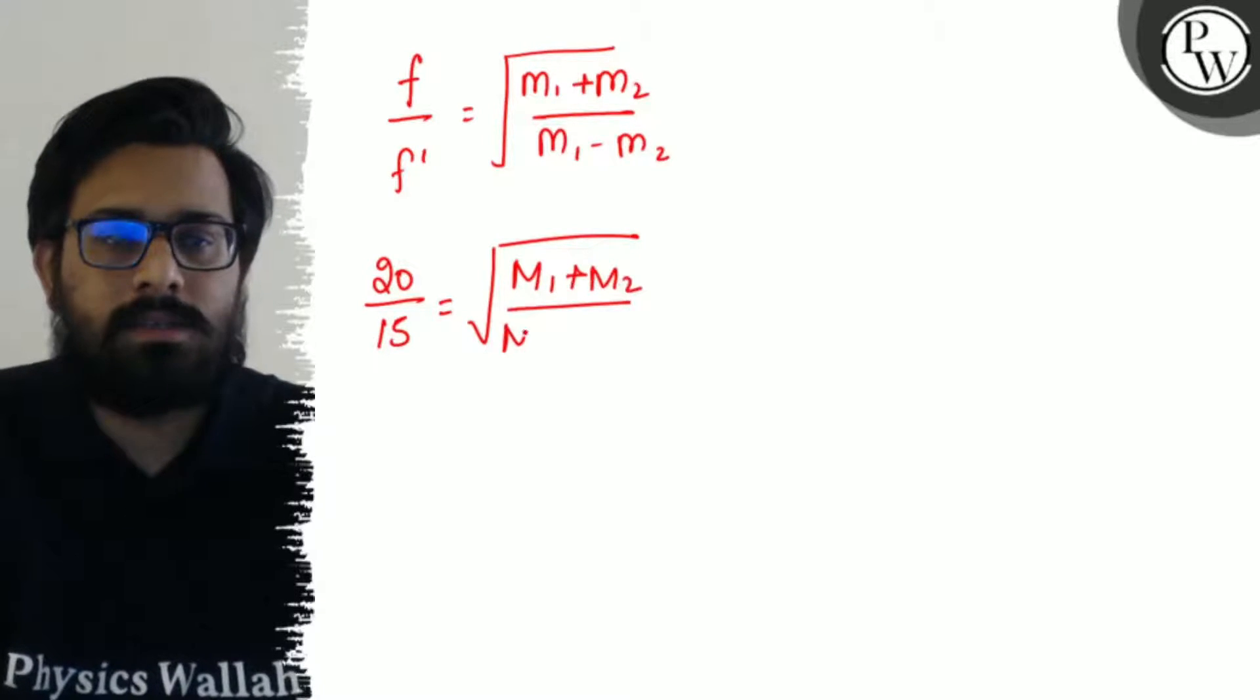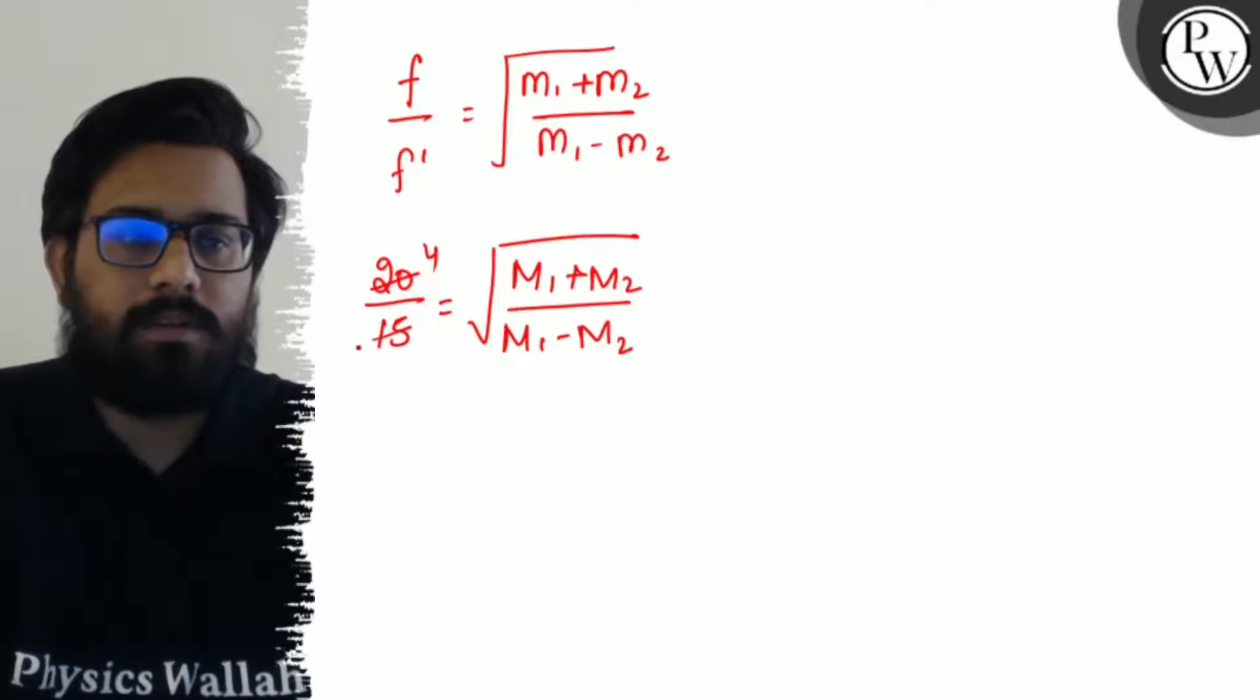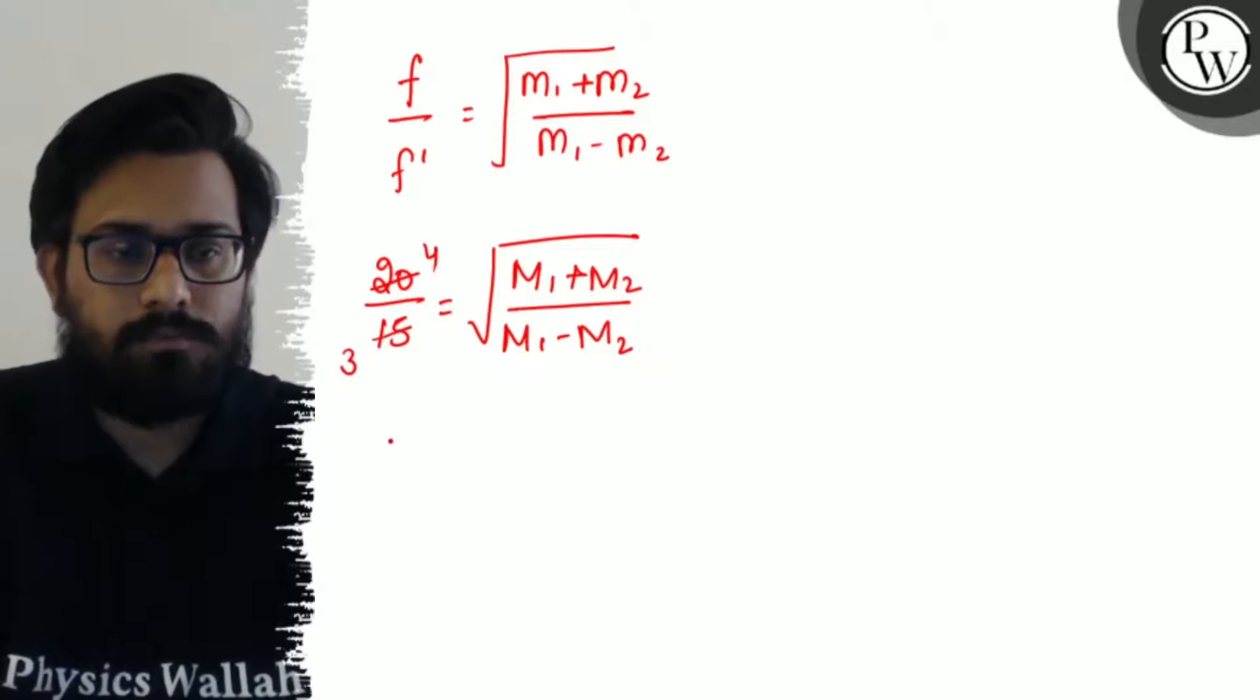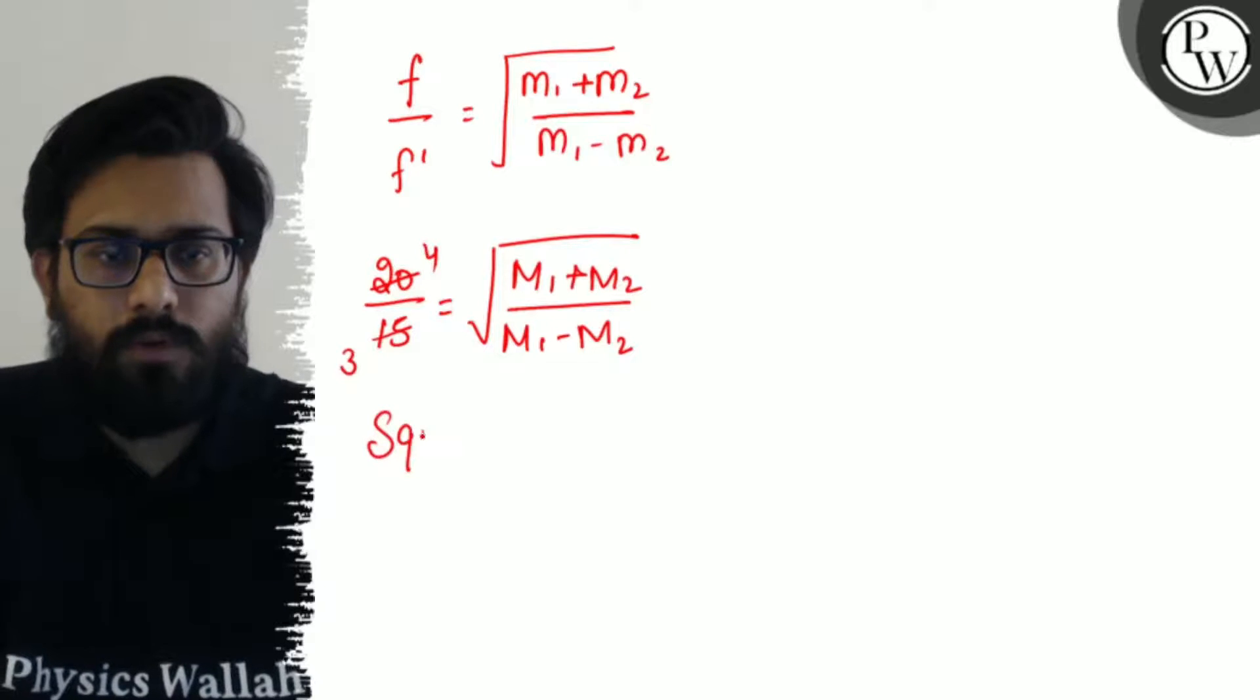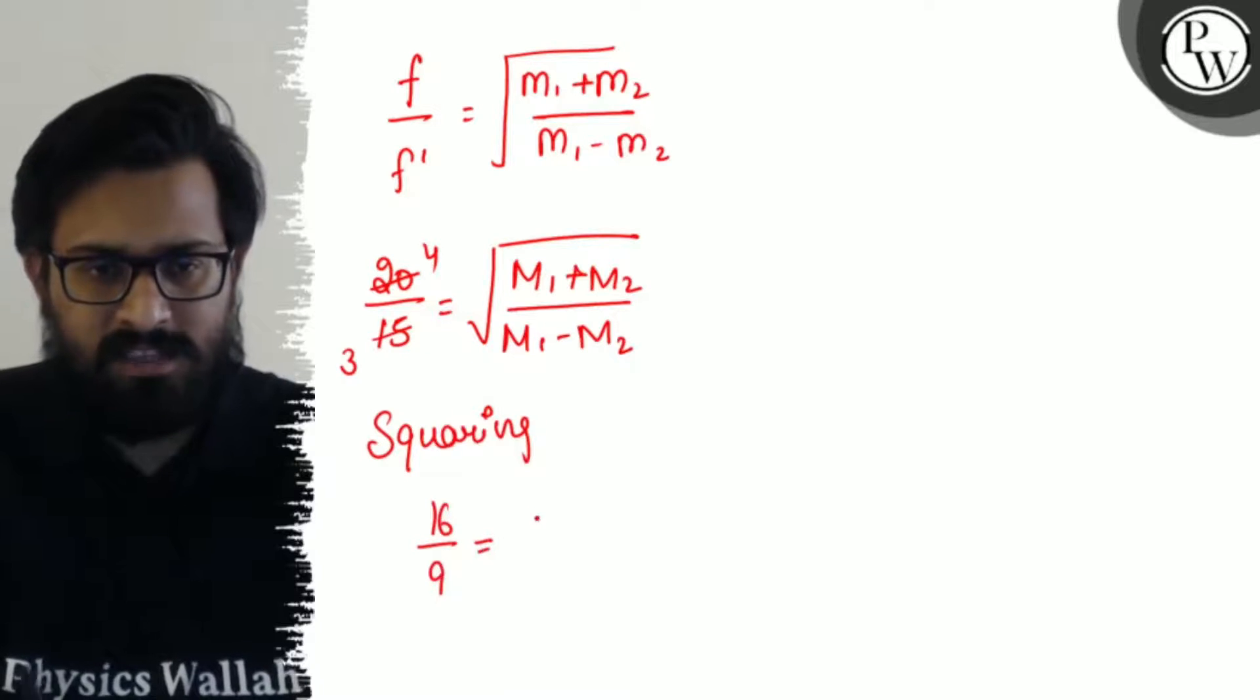20 upon 15, so it comes out to be 4 by 3. And then we have to square it, so it comes out to be 16 upon 9 is equals to M1 plus M2 upon M1 minus M2.